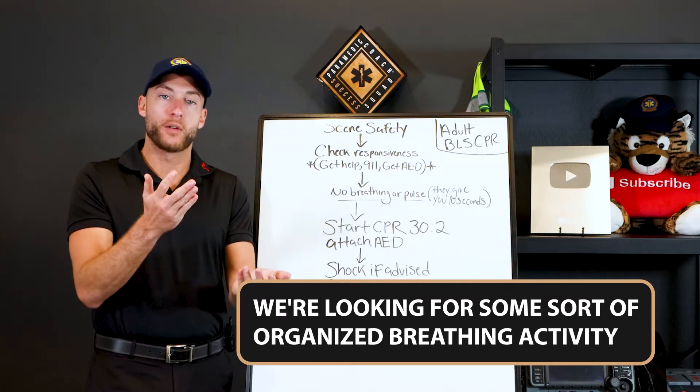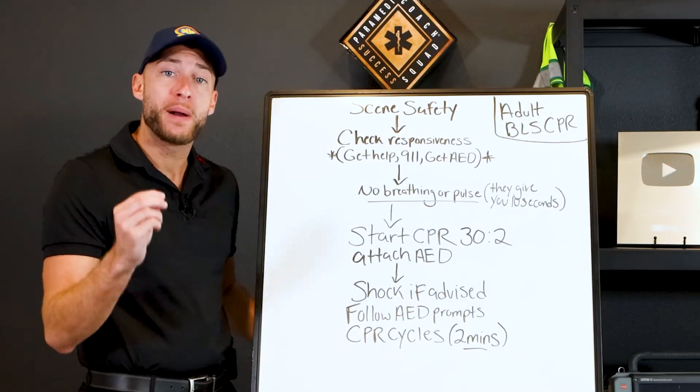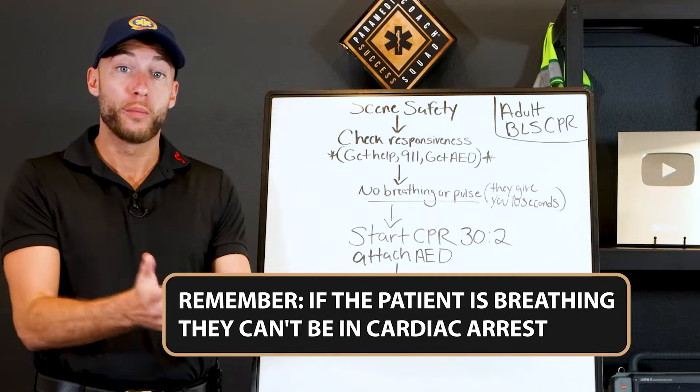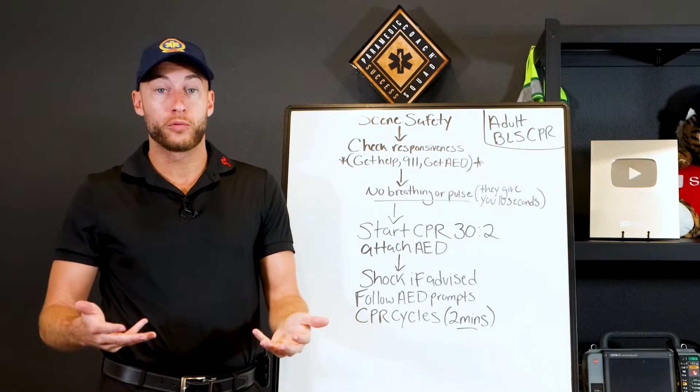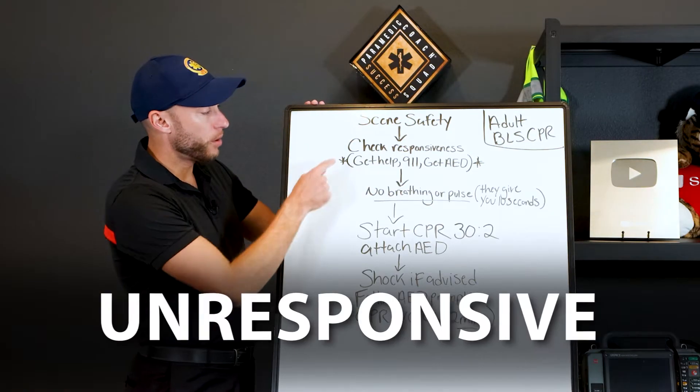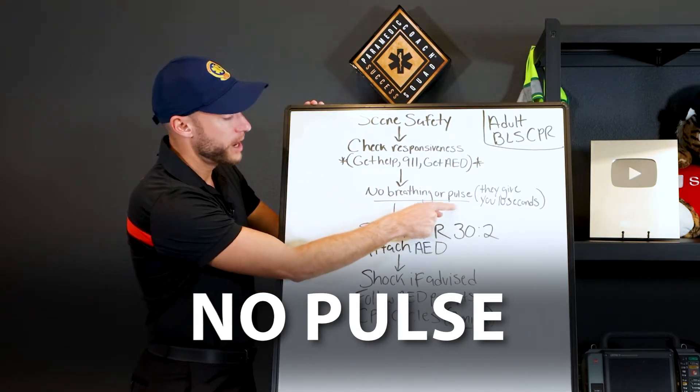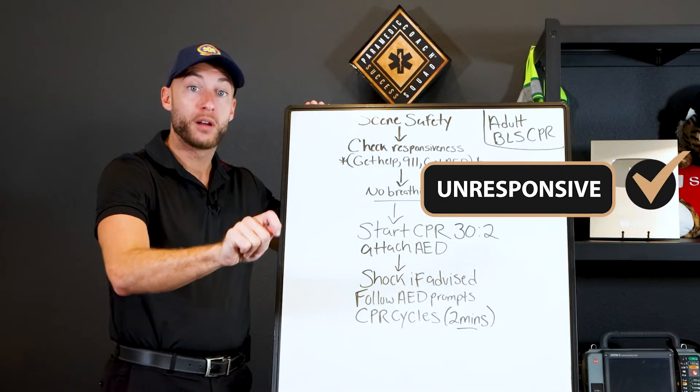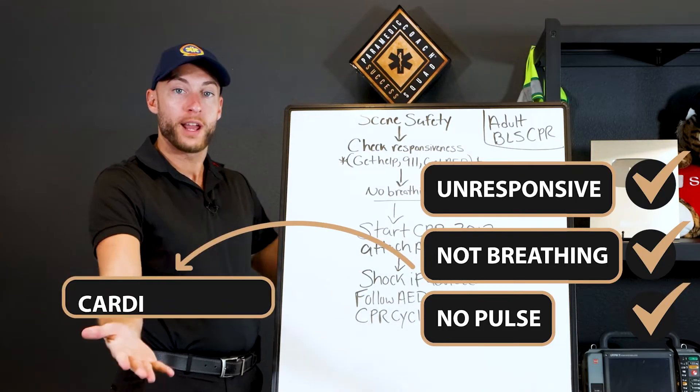Now for breathing, agonal breathing like gasping, the final breathing that someone takes, that's not breathing. We're looking for some sort of organized breathing activity. Now remember if the patient is breathing they can't be in cardiac arrest, they're still breathing. So most likely they're gonna have a pulse with that as well. If they're unresponsive, if they have no pulse and they're not breathing, those are the three check marks. Unresponsive, not breathing, no pulse equals cardiac arrest.